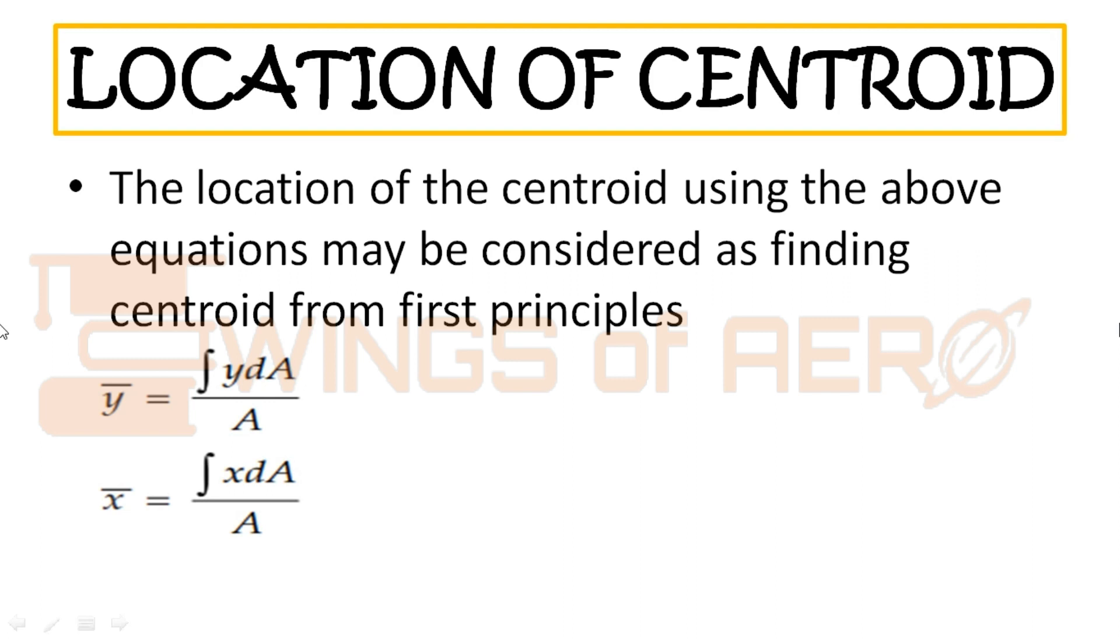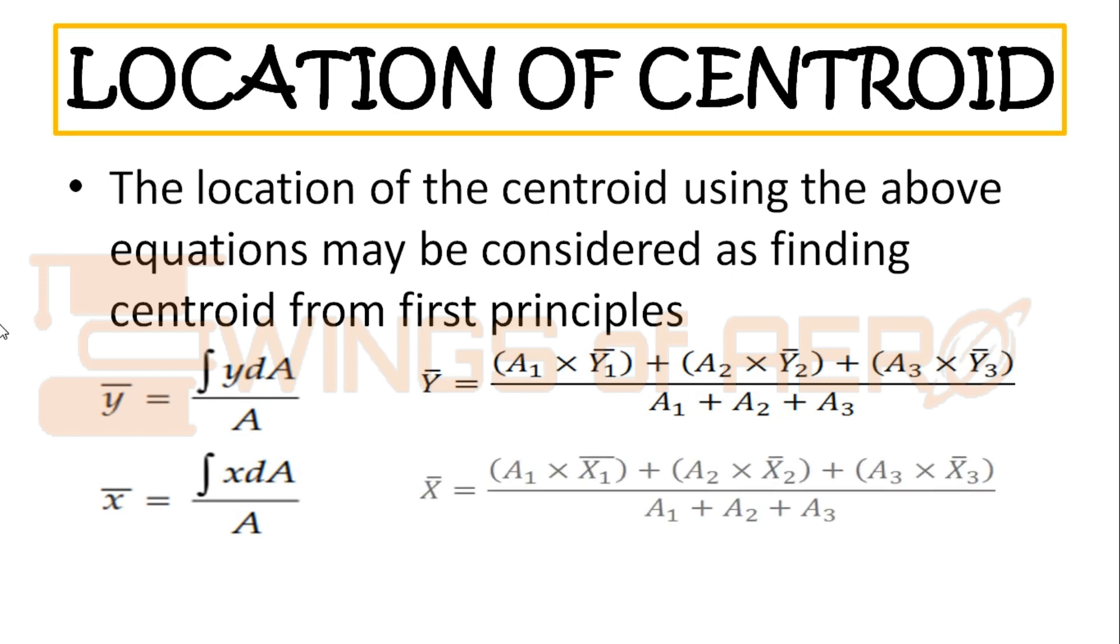Now comes how to find the location of centroid. Basically, as you can see the formula displayed on your screen, if we have three sections, we can write y bar equals to A1 times y bar 1 plus the number of elements divided by the total area. Similarly, if we have three elements of any structure or section, we can write x bar as displayed on your screen.